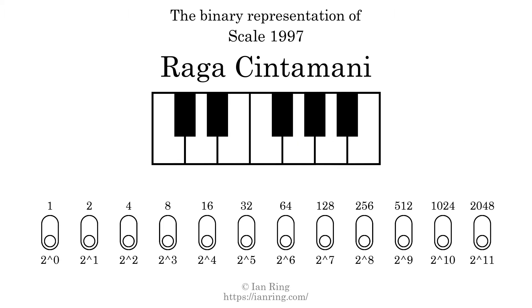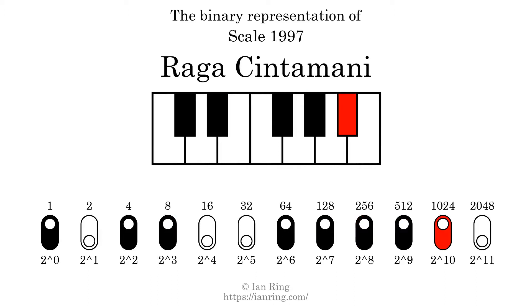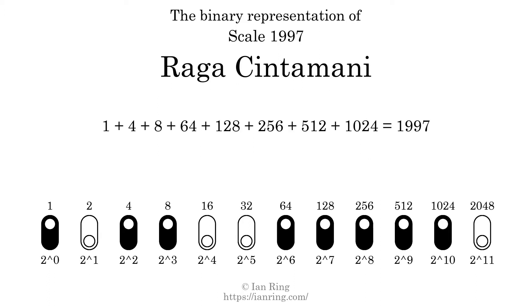The binary representation of this scale is determined by mapping tones of the scale to binary digits. Each binary digit represents a power of 2. To get the scale number, we add the powers of 2 together. The powers of 2 that are present in the scale, all added together, equals 1997. That is why the scale number, in decimal, is 1997.